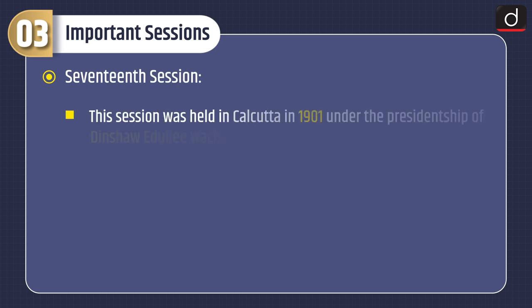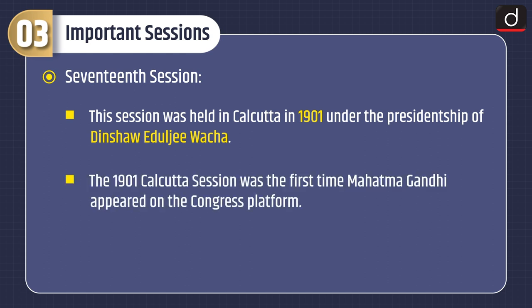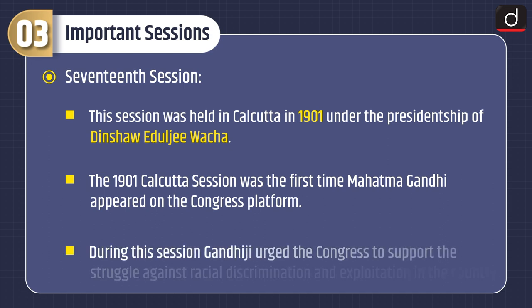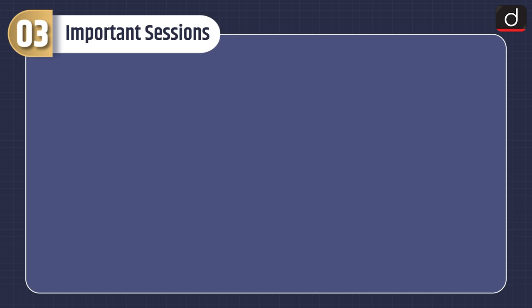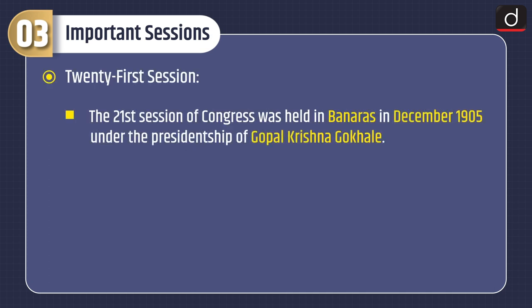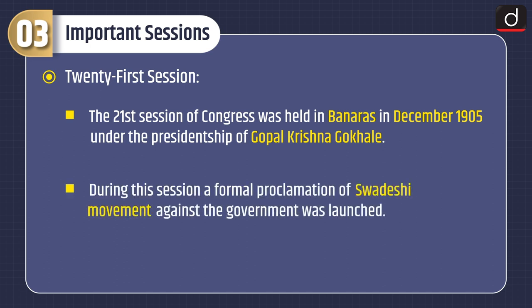Seventeenth Session: This session was held in Calcutta in 1901 under the Presidentship of Dinshaw Edulji Vacha. The 1901 Calcutta session was the first time Mahatma Gandhi appeared on the Congress platform. During this session, Gandhiji urged the Congress to support the struggle against racial discrimination and exploitation in the country. Twenty-first Session: The twenty-first session of Congress was held in Banaras in December 1905 under the Presidentship of Gopal Krishna Gokhale. During this session, a formal proclamation of the Swadeshi movement against the government was made. The partition of Bengal was also opposed.